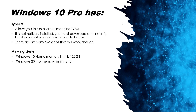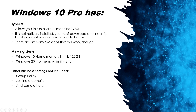There are other business settings not included in Home. Group Policy is used to manage the computer remotely from an administrative point of view. You also can't join a domain with Windows 10 Home — a domain is what you use for networking. There are some others, but these are the most important things that Windows 10 Pro has that Windows 10 Home does not.